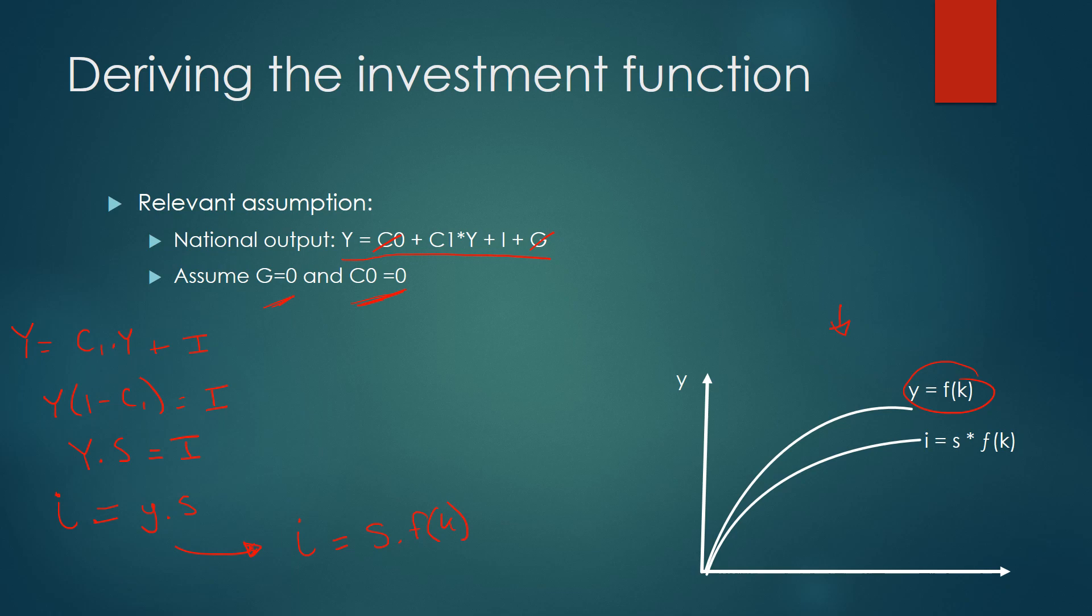The savings rate is how much income you save, and that's always going to be less or equal to 1. Hence, therefore, this S multiplied by F(k) is always going to be less than F(k), unless S is equal to 1, which is highly unlikely because you don't save all your income. So therefore, the investment function here is always lower down than the production function, but essentially it takes the same shape.